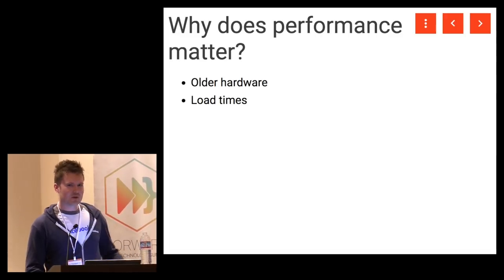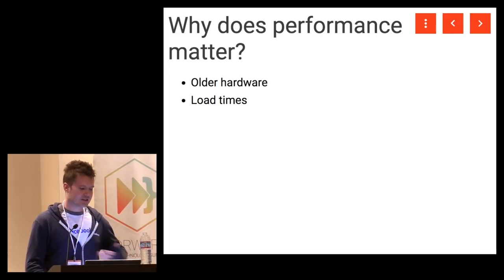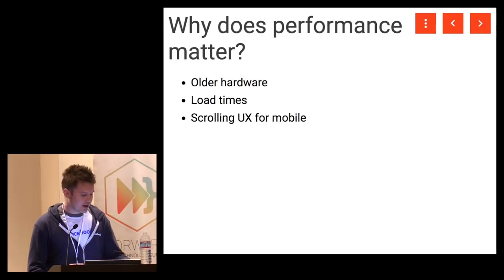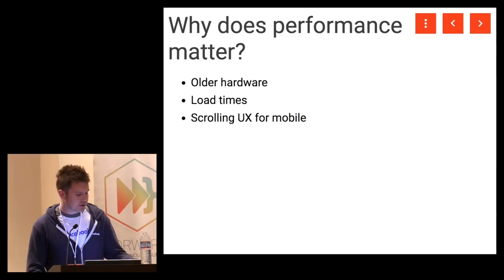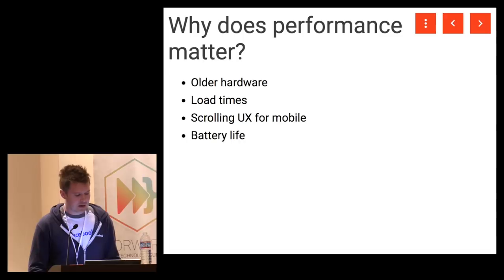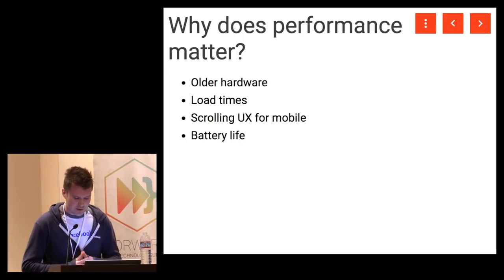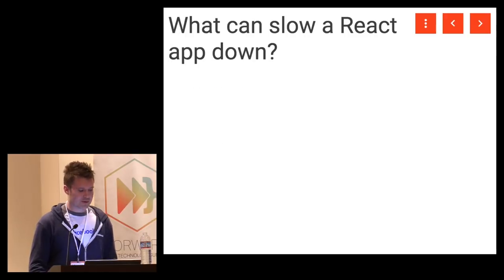Slow hardware impacts your applications in a variety of ways. One is slow load times — if it takes longer for your application to load, users are going to leave. Similarly, performance problems often manifest in scrolling, which is a crucial part of the user experience on mobile devices. It also impacts battery life. These are all reasons why we should care about performance.